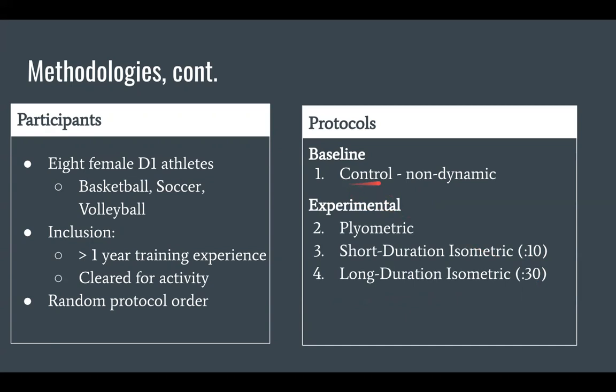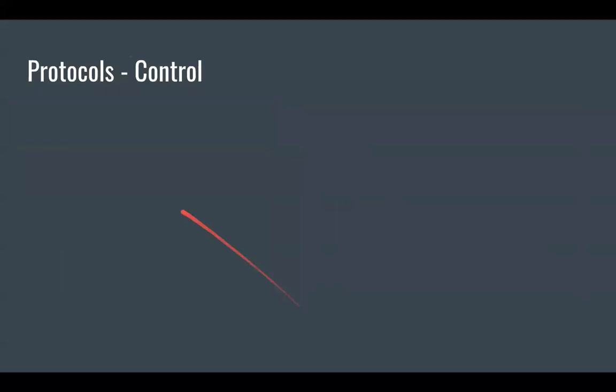It's important to note that the control, the non-dynamic warm-up, though everybody did perform it on their very first session, this served as the base for all of the experimental protocols. Meaning, if they were going to do the short duration protocol, they began with the same non-dynamic warm-up that they did for session one and added on the isometric protocol. They performed three sprints at each of these protocols at one, five, and ten minutes post-potentiation or post-protocol. In total, they performed 12 sprints for the entire study.